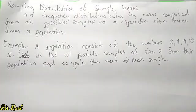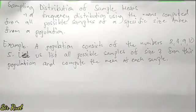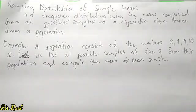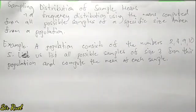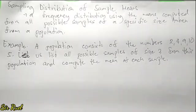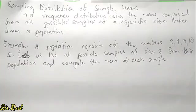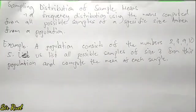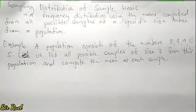Example: a population consists of the numbers 2, 4, 9, 10, and 5. Let us list all possible samples of size 3 from this population and compute the mean of each sample.